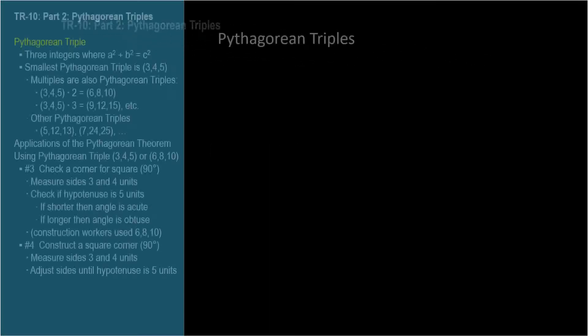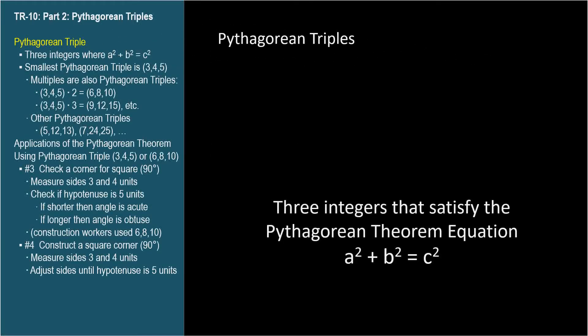A Pythagorean triple is a set of three positive integers that satisfy the Pythagorean theorem equation a squared plus b squared equals c squared.